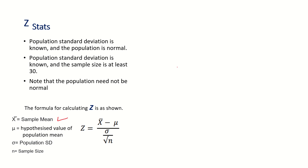Here, X-bar stands for sample mean, mu is the hypothesis value of the population mean, sigma is the population standard deviation, and n is the sample size. So to run the Z statistic, we need these four values: mu, sample mean X-bar, population standard deviation sigma, and the sample size n.